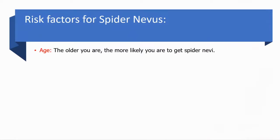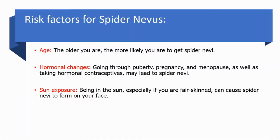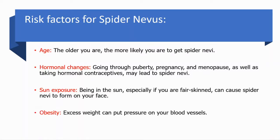Risk factors for spider nevi are: age — the older you are, the more likely you are to get spider nevi; hormonal changes — going through puberty, pregnancy, and menopause, as well as taking hormone contraceptives, may lead to spider nevi, as higher estrogen means a higher chance; sun exposure — being in the sun, especially if you are fair-skinned, can cause this condition; and obesity — excessive weight can put pressure on your blood vessels and could cause spider nevi.